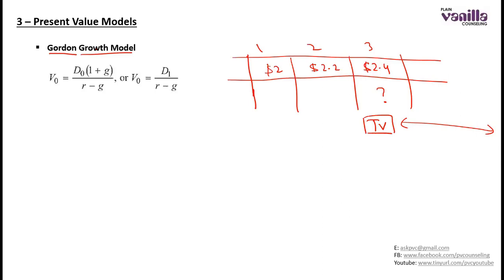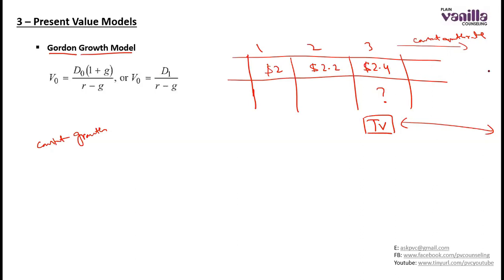What is the Gordon Growth Model? Gordon Growth Model assumes a constant growth rate. It tells you what will be the present value of all future cash flows if those cash flows continue to grow at a constant growth rate. The key assumption is that from a certain point onward, the dividend will continue to grow at a constant growth rate. So Gordon Growth Model can tell you the terminal value if dividend continues to grow at a constant growth rate from that point.